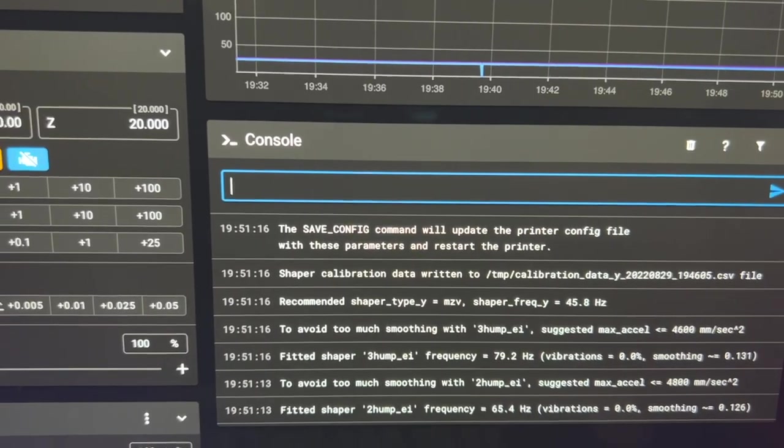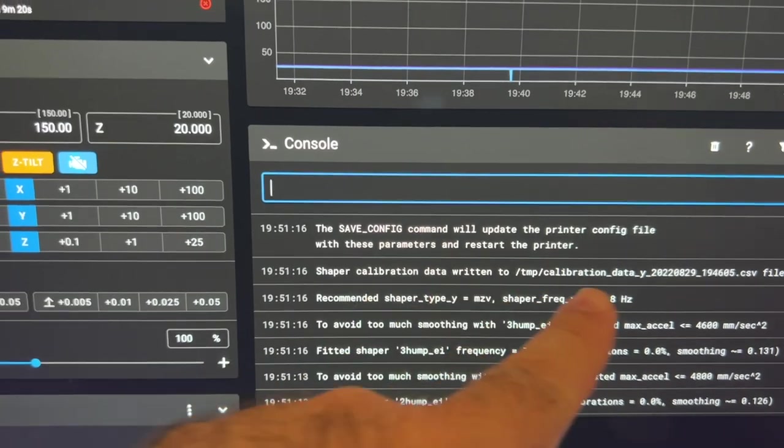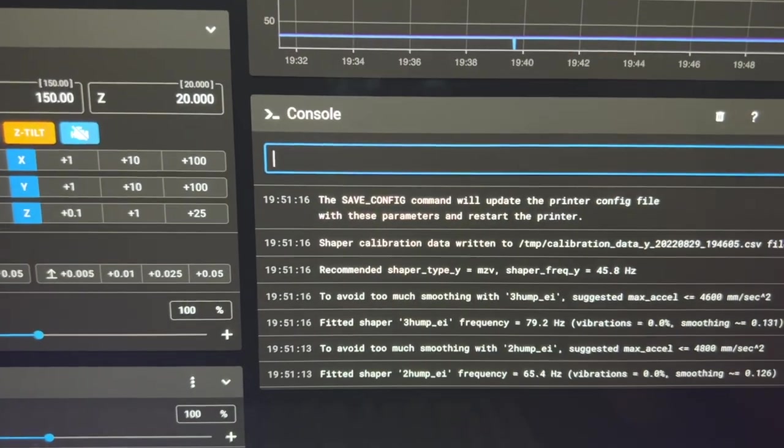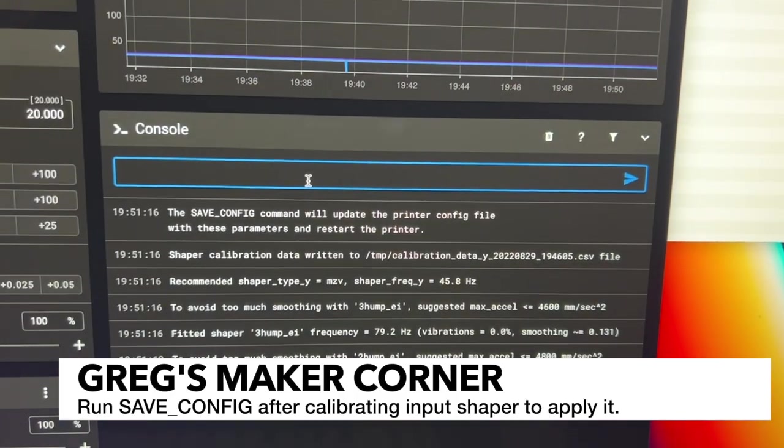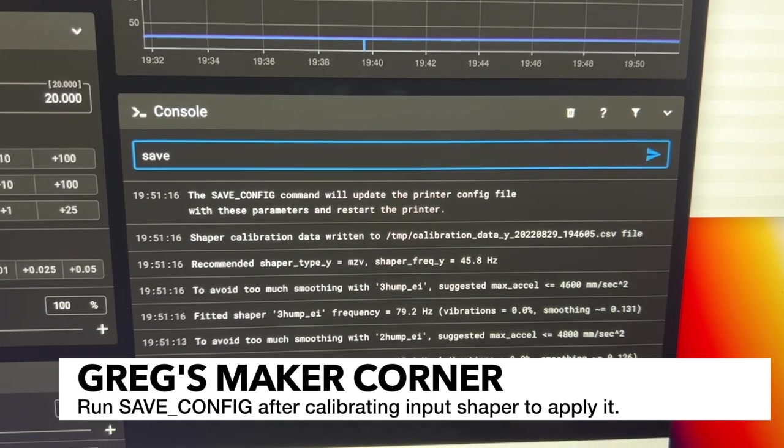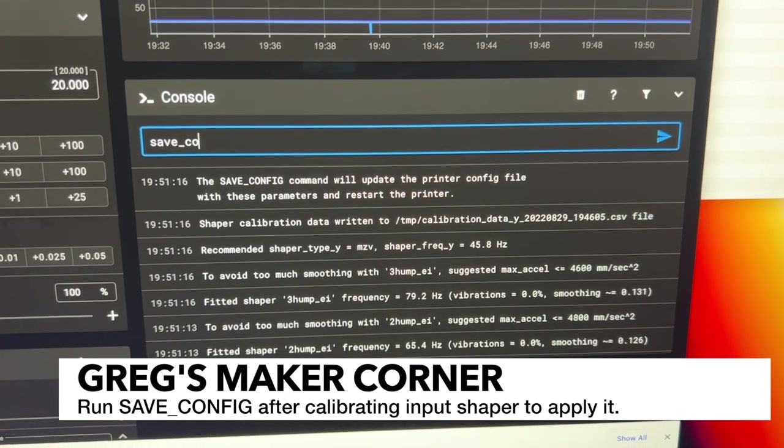So now what we can do is we can go ahead and hit save config. Or we can take a look at the data as well. I'm just going to go ahead and do save config. And then I will try and pull up the data and show that also.